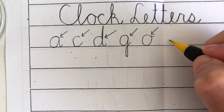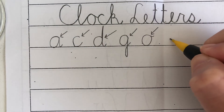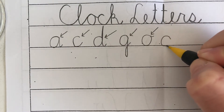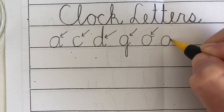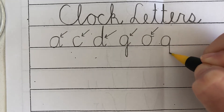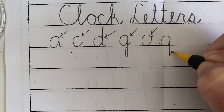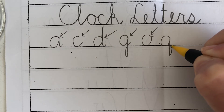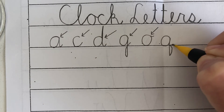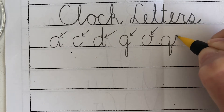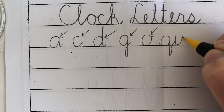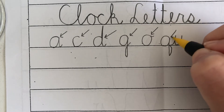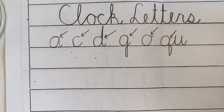And Q — we always connect Q with U. Pull straight down, pull back. The difference between G and Q is Q pulls back. Tiny upswing, let's connect it with U. A Q is always followed by a U. Starts at two on the clock.